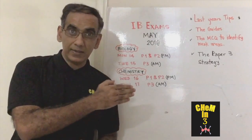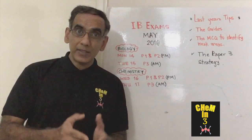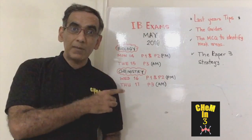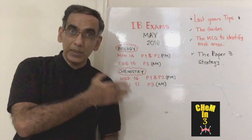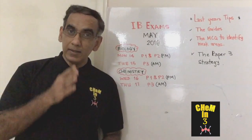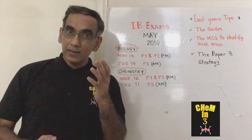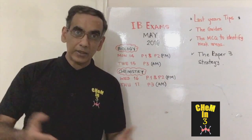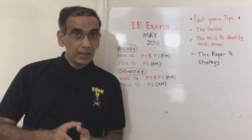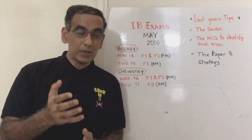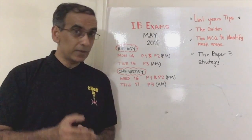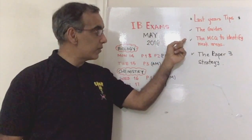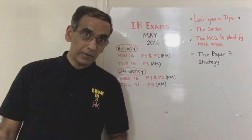On May 14th, in just about 44 days from now, you will be getting ready to go into the exam hall on the afternoon period to take paper one of IB biology, and then after a short break you would move into paper two, SL or HL. Both of these papers are very important, and I have given many tips about how to approach both papers in previous videos, including how to use the multiple choice questions to your advantage.